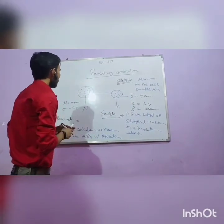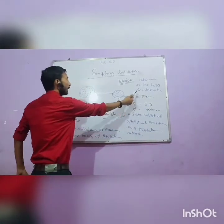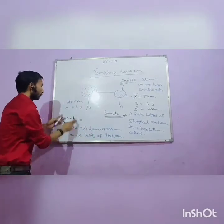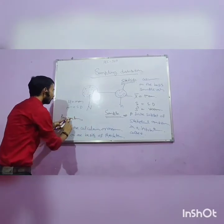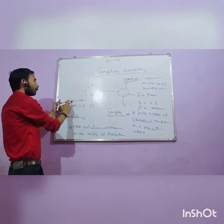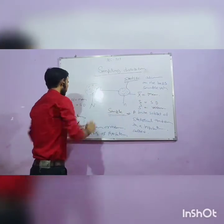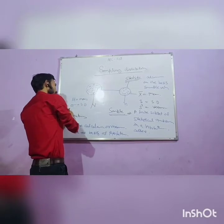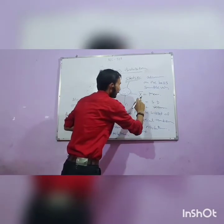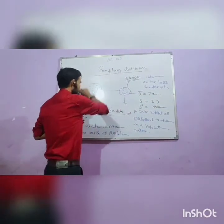To summarize: if the calculation is on the basis of sample value it is known as statistic; if the calculation is on the basis of population value it is known as parameter. Mean is denoted by mu for parameter and x-bar for statistic. Standard deviation is denoted by sigma for parameter and s for statistic.